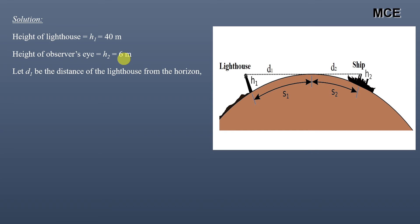Let d1 be the distance of the lighthouse from the horizon. So h1 = 0.0673 d1², or d1 = √(h1 / 0.0673).